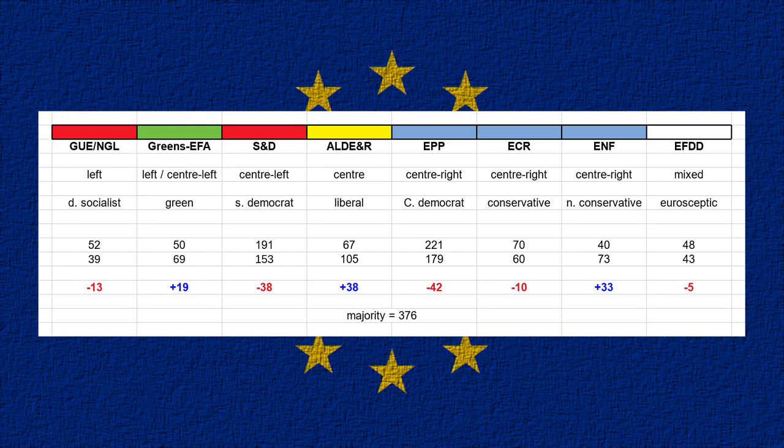In this video I'm going to talk about the different political groups in the European Parliament, which national parties are members of which groups, and how they all got on in last week's European elections. I'll also talk about the Spitzenkandidat process for the President of the European Commission and how that's going.